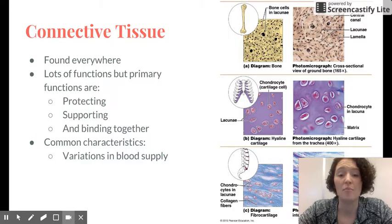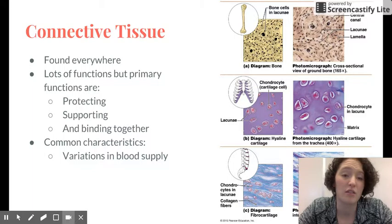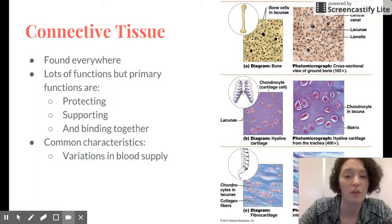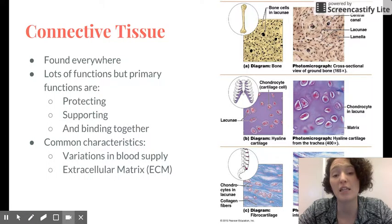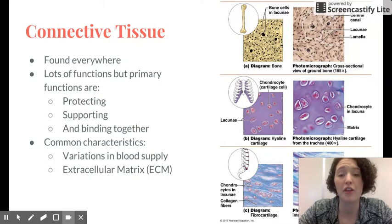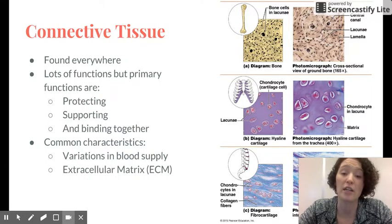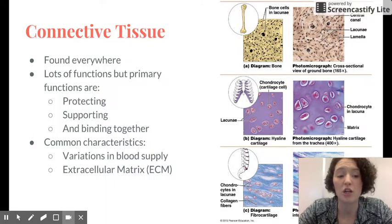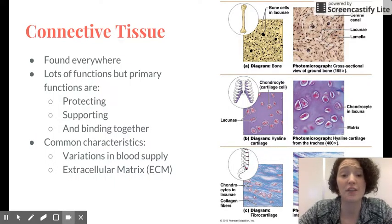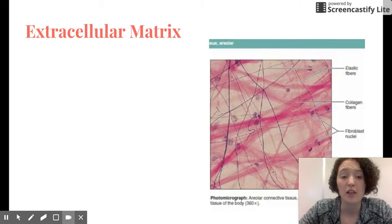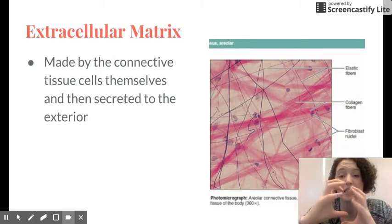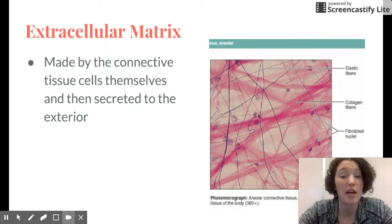And so that also makes them difficult to heal. So variations in blood supply, but the big thing is that they're all involved with their extracellular matrix, which I'm going to talk about on the next slide. There's lots of variation in connective tissue. The extracellular matrix is probably the biggest thing that connective tissues have in common.